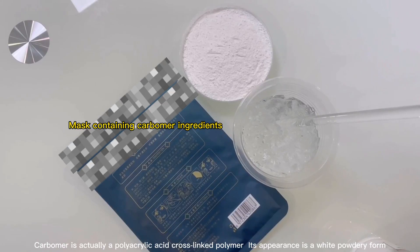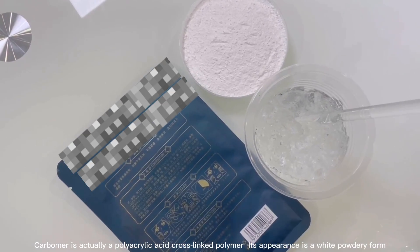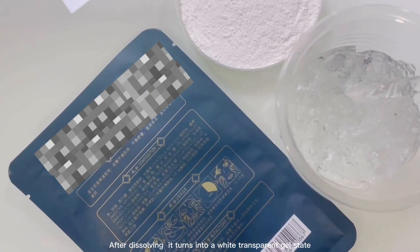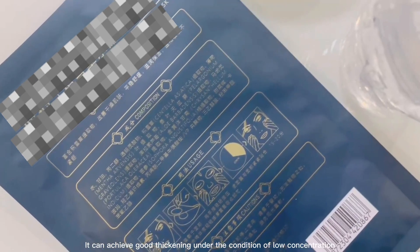Carbomer is actually a polyacrylic acid cross-linked polymer. Its appearance is a white powdery form. After dissolving it turns into a white transparent gel state. It can achieve good thickening under the condition of low concentration.